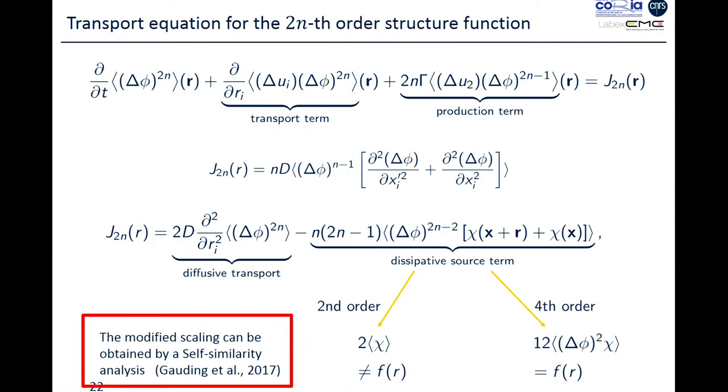The same results hold for higher-order moments. I will finish by going back to the transport equations that can be obtained. Here we are for the scalar. From the advection-diffusion equation, this is a divergence term, the transport through the velocity field. This is a production term.